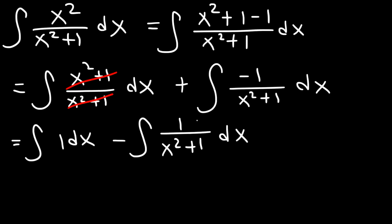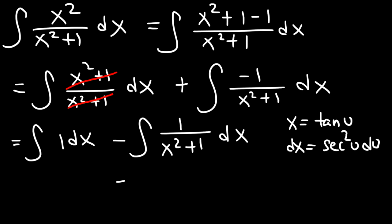How can we integrate this expression? We need to use trigonometric substitution. We're going to make x equal to tan u, and so dx is going to be the derivative of tangent, which is sec² u du. So we have the integral of 1 over tan² u + 1, and we can replace dx with sec² u du.